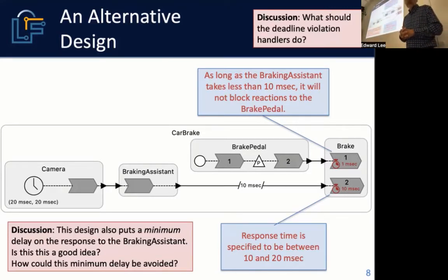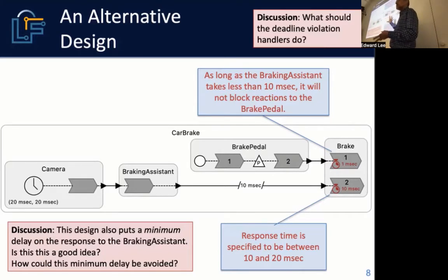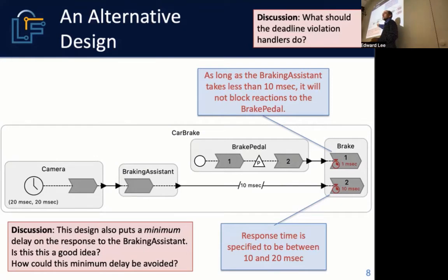Variability requires building margins to account for it, but the nice thing about this software framework is that your assumptions are made explicit. This is an explicit assumption that the execution time is bounded, and if that execution time gets exceeded, one or both deadlines will be violated.